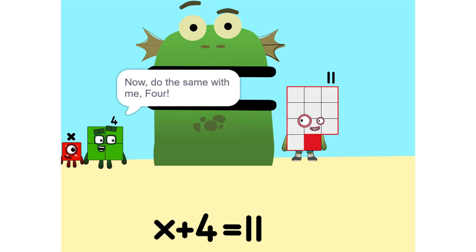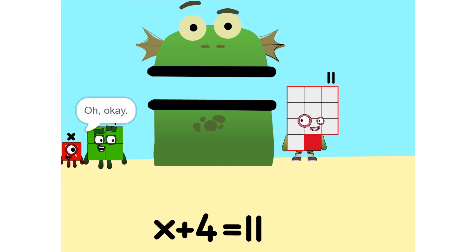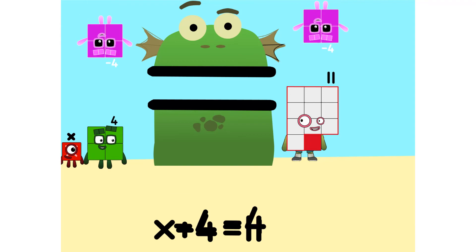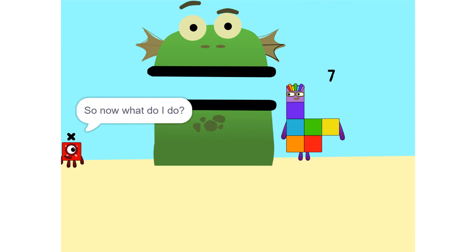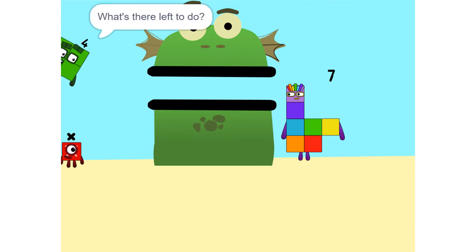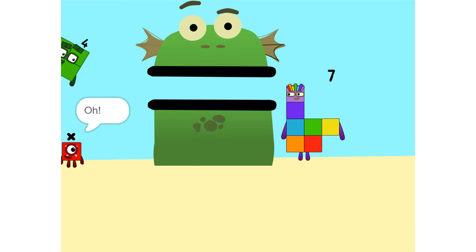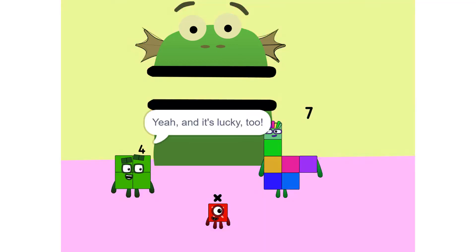Now do the same with me. 4. 11 minus 4 is 7. So now what do I do? What's there left to do? X equals 7. So I'm 7. Yeah.